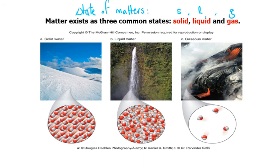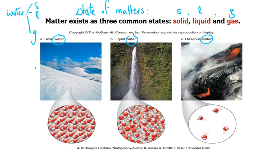In physics we may have more types — we may consider plasma — but in chemistry please consider only SLG. As you see in this slide, there are images of solid, liquid, and gases for water. If we have a matter like water, it can be found in three different states: solid, liquid, and gases. This is a unique property of water because in our universe we can find these three states of matter for water without needing any special changes in nature.